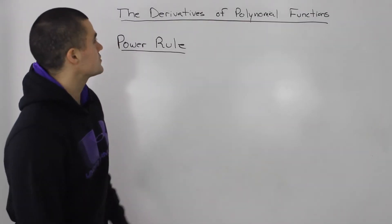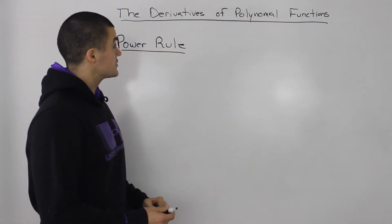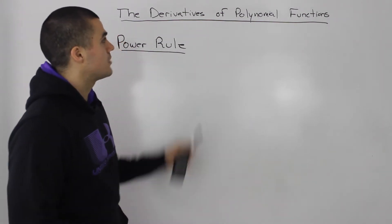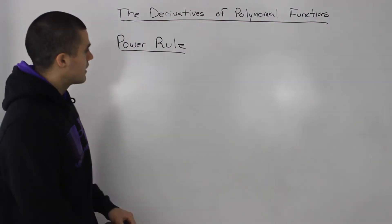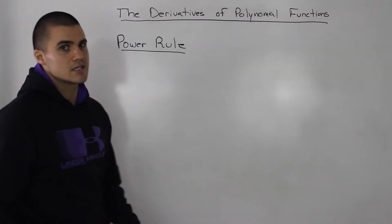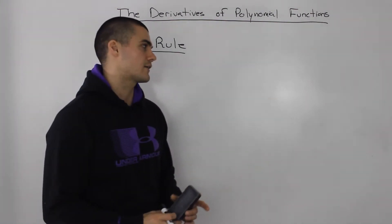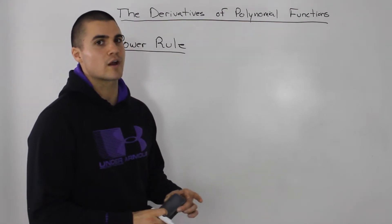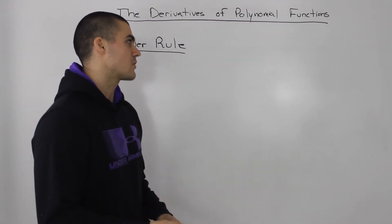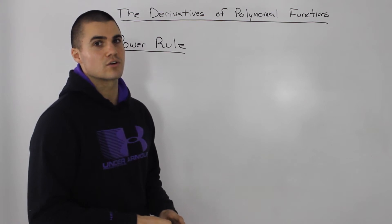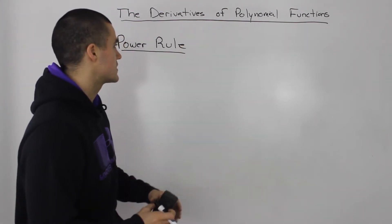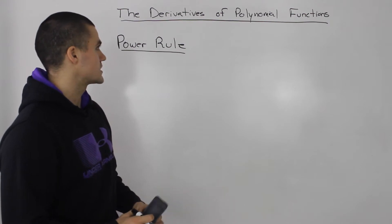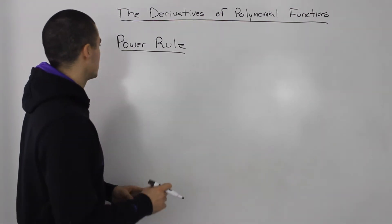All right, so moving on to the next section of this chapter, we have the derivatives of polynomial functions. The first thing we're going to talk about is the power rule. This is going to be a shortcut for finding derivatives. You're probably going to wish you knew this a little earlier—you wouldn't have to do all that crazy algebra with the difference quotient. But let's do a little review here.